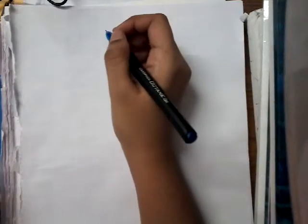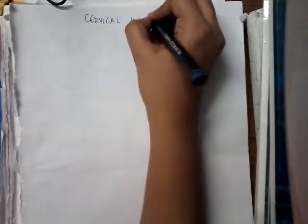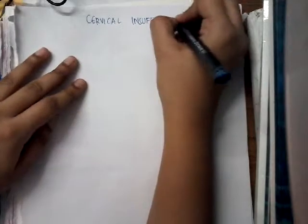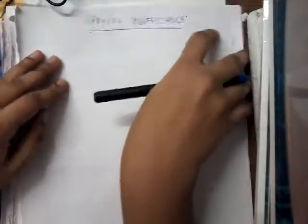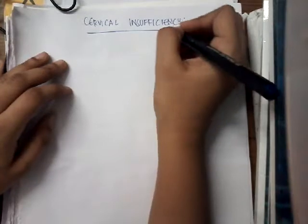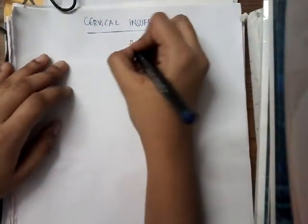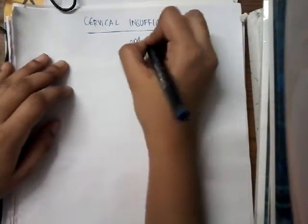Hello friends, welcome to a new lecture today. I would like to explain about cervical insufficiency. In our last class, we learned about recurrent pregnancy loss. One of the causes of recurrent pregnancy loss is cervical insufficiency, which occurs in the second trimester.